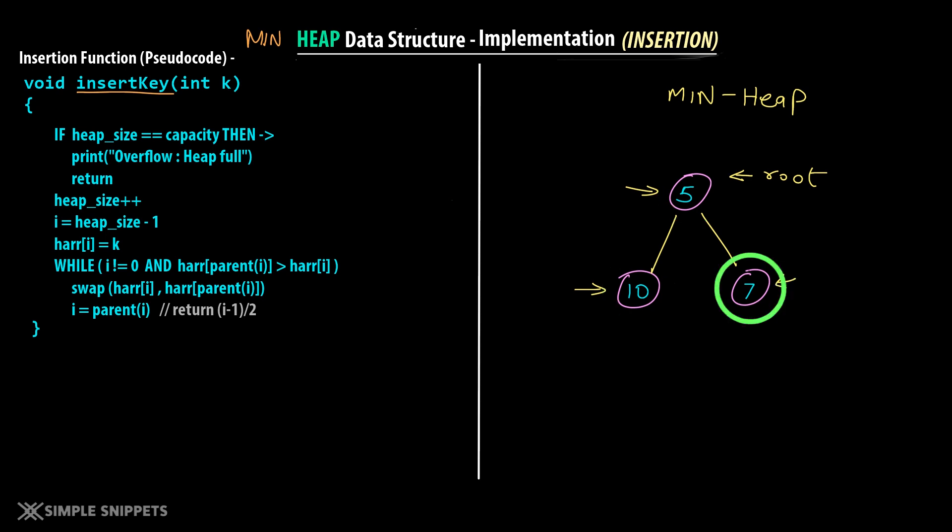This is the very main concept of min heap or max heap — this property needs to always be true. It is also a complete binary tree. So now let's say you want to add one more value — you're inserting a new value.